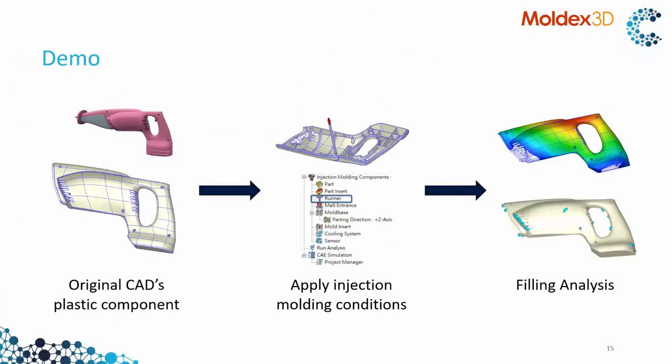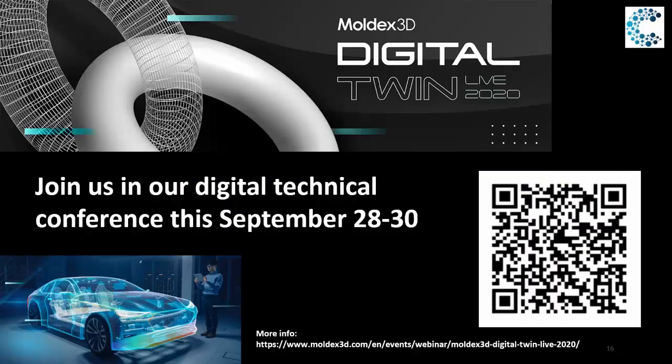So to recap what we have done: you can use your original designs and send them to Moldex by using the design sync module that is available in your CAT software — in this case NX. After that, you can do the results review — finding out what's happening when you're filling a plastic part with the molding injection simulation. This is a little bit of what we wanted to show today.